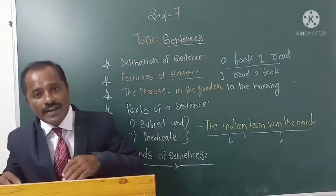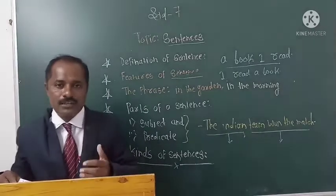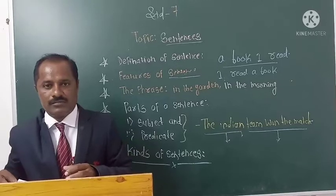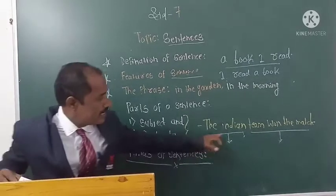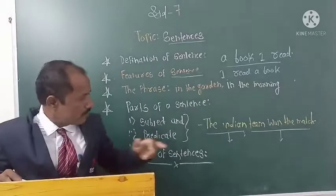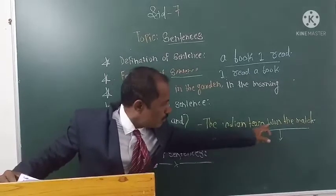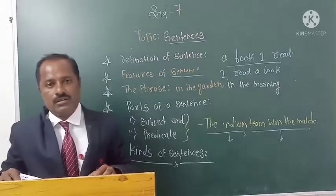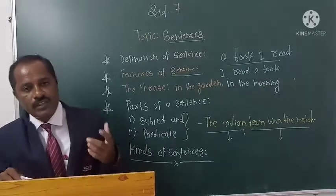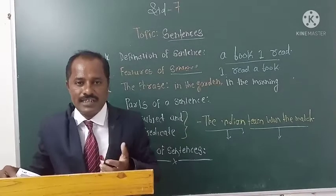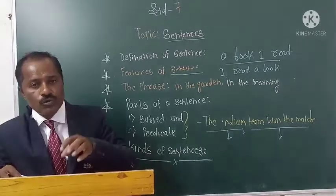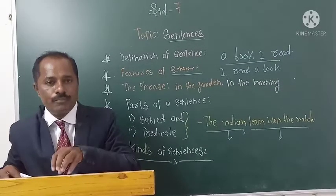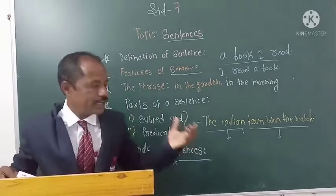How can we identify the subject part and predicate part? The verb is the essential part of the predicate. In the given sentence, 'The Indian king owns the match,' the verb is important. Whenever we try to identify the predicate and subject part of a sentence, we should know that the verb is the essential part of the predicate.